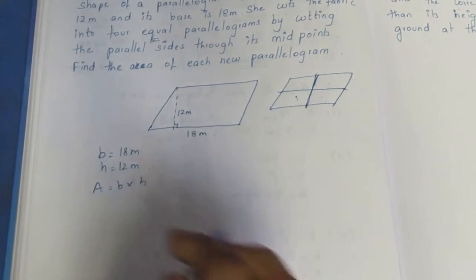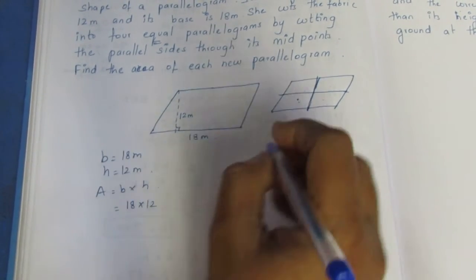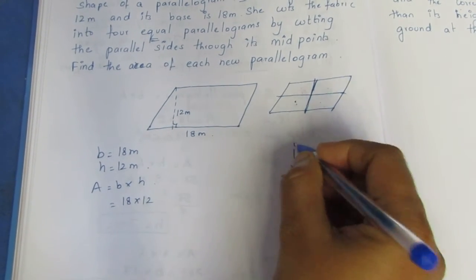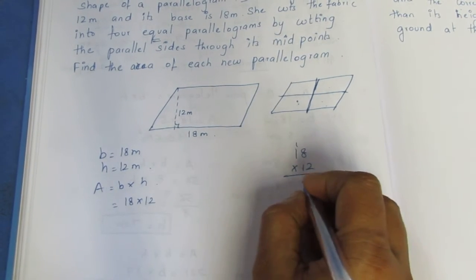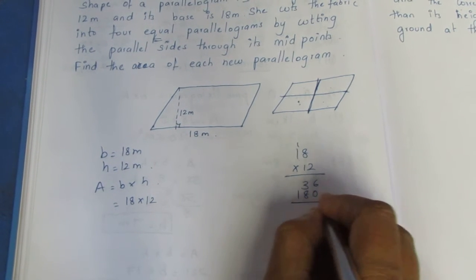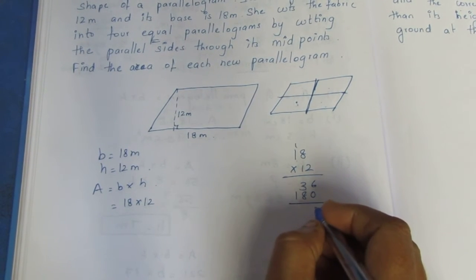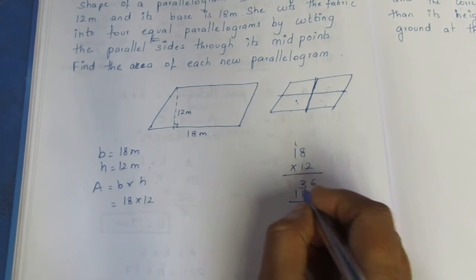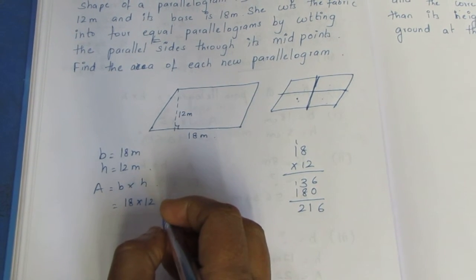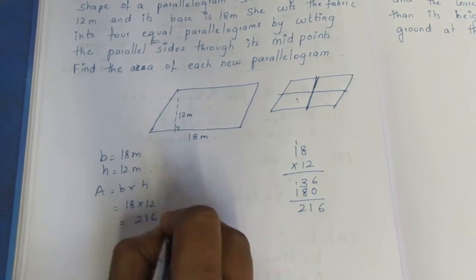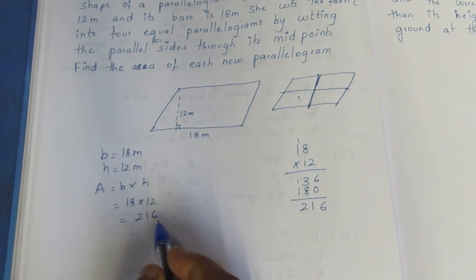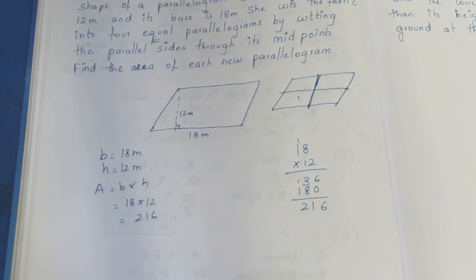We will substitute the values: base 18 multiplied by height 12. 18 times 12 equals 216. So the area of the full cloth is 216 square metres. Now we divide by 4.